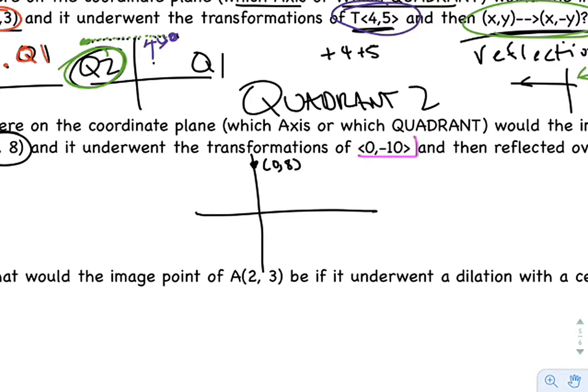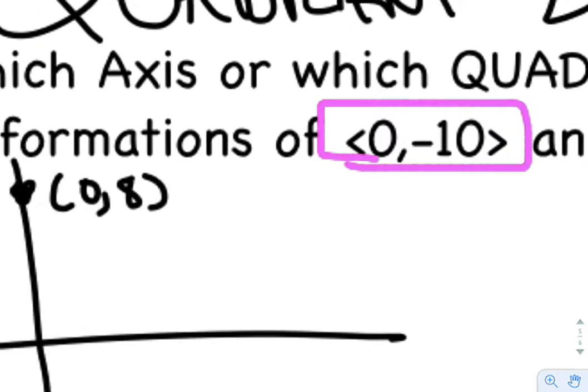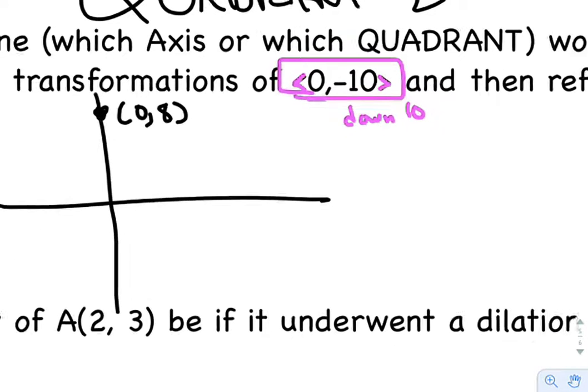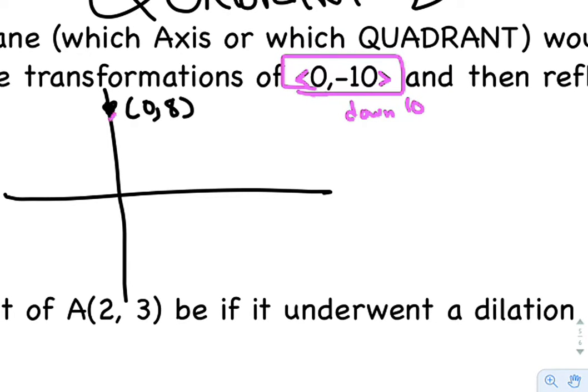So the next movement is a transformation. It doesn't tell you exactly what, but it does mention that it's in vector notation, which means this is going to move down 10 but it's not going to move at all zero. So we're going to move straight down 10. So if we move straight down 10, we should end up at (0,-2).